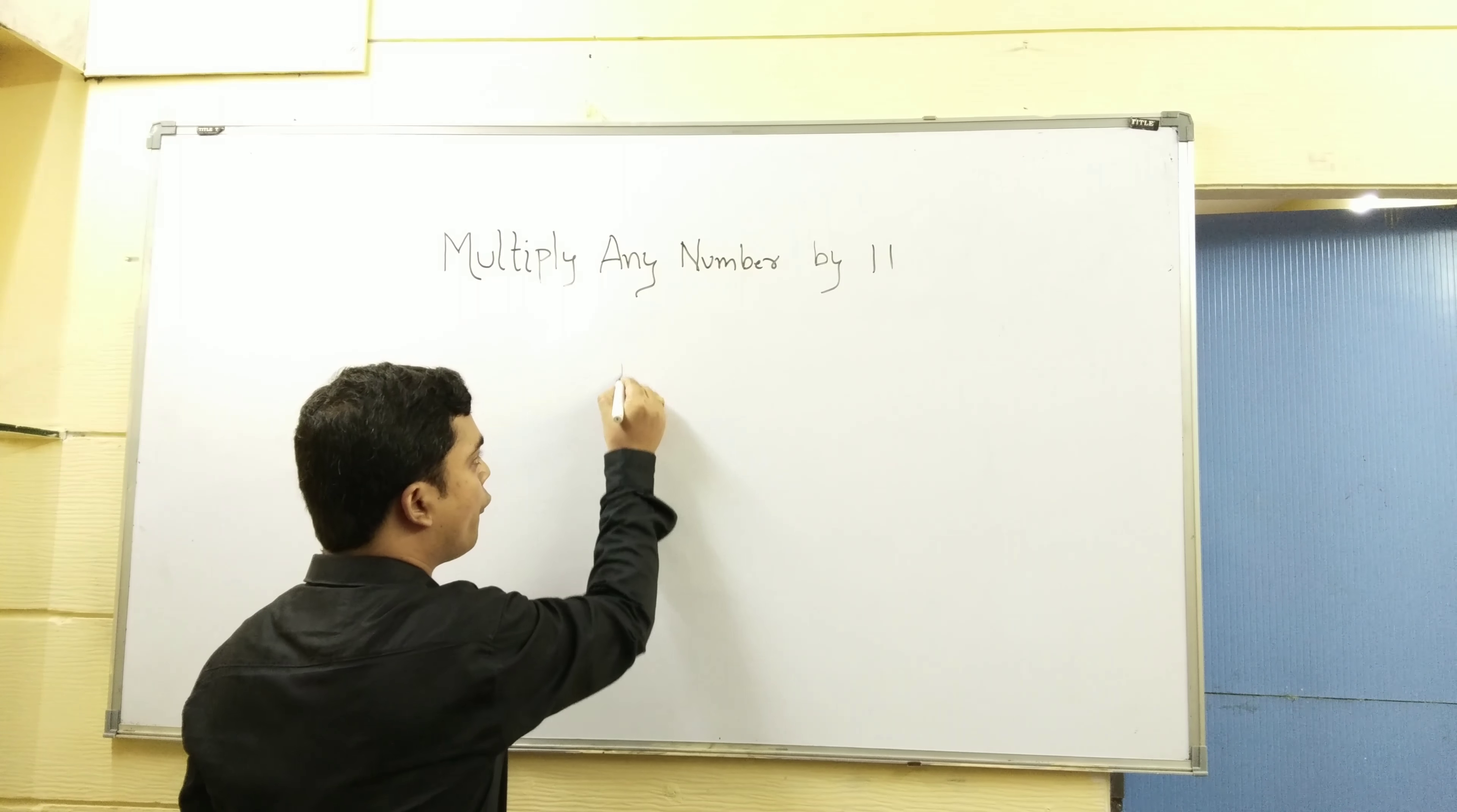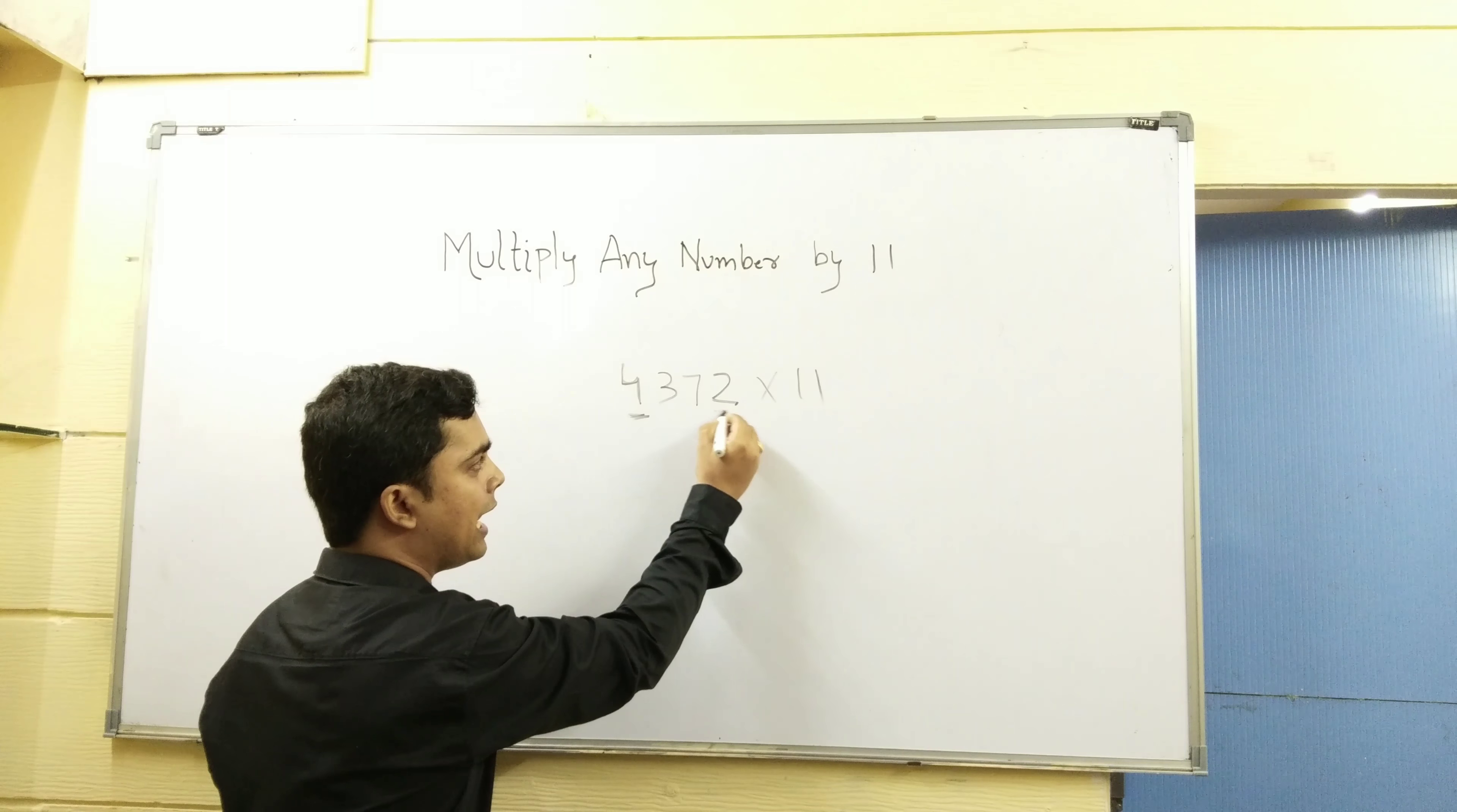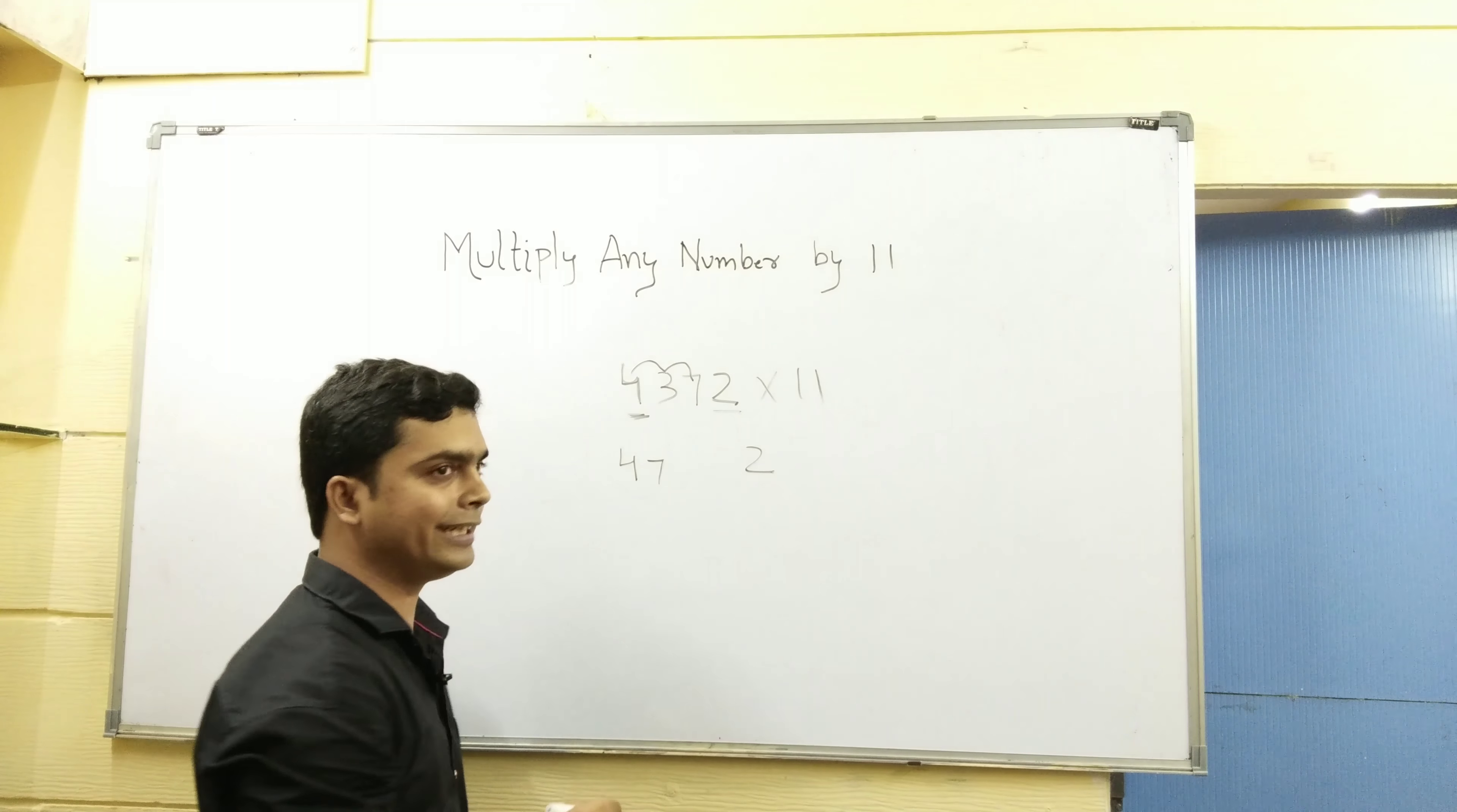Example 4, 4372 multiply 11. Now, last number, first number 4, last number 2. Here 4, here 2. What are you doing? Here 4 plus 3, 7. 3 plus 7, 10.